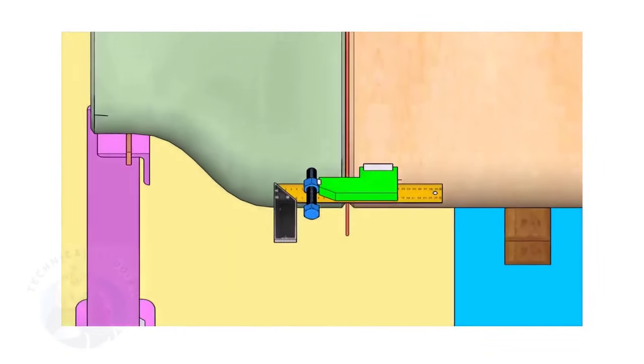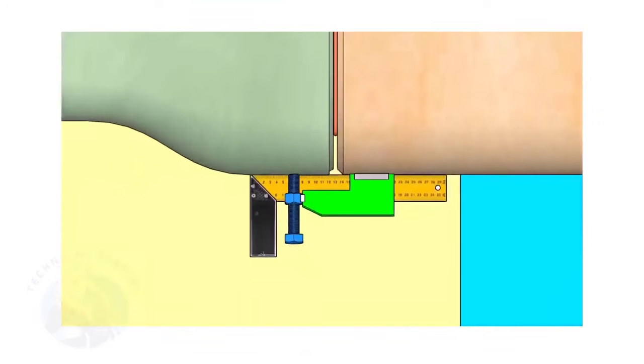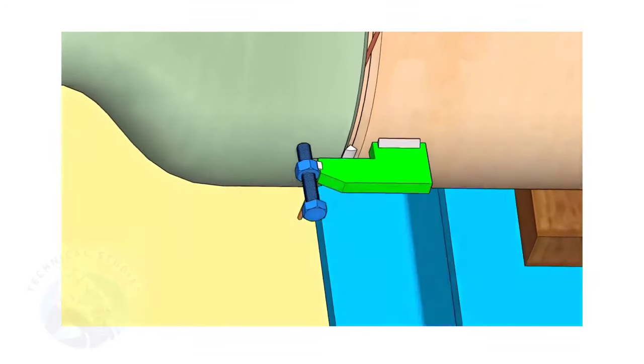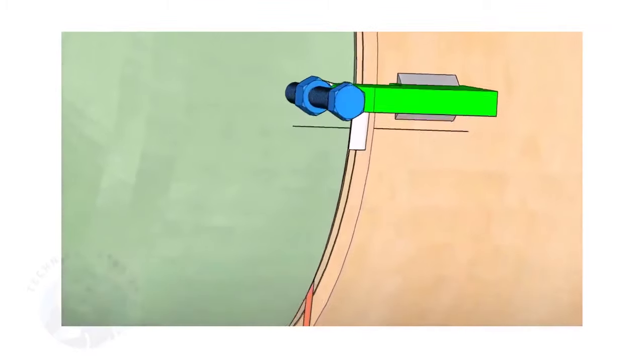Correct the straightness of the joint on both sides. If required, remove the gap rod. Tack weld on both sides.